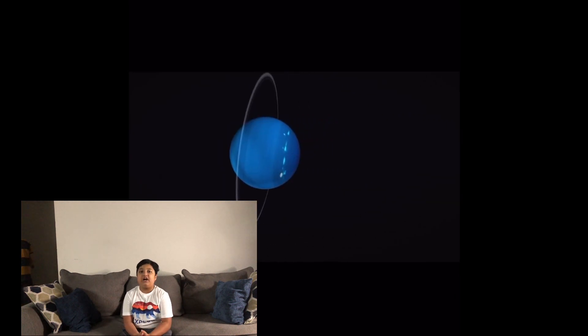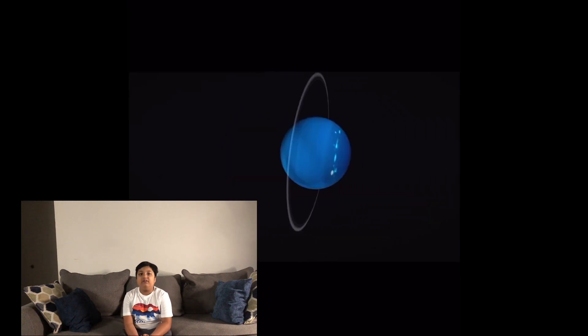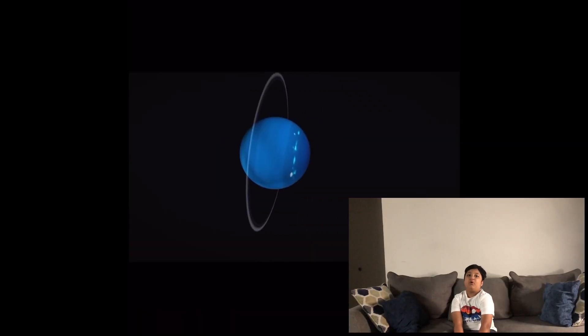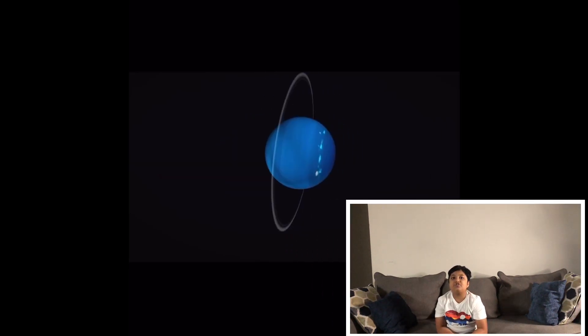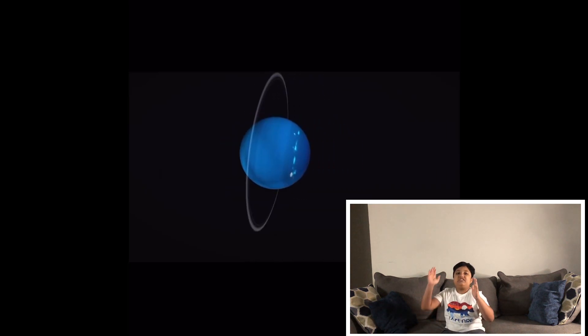After Saturn comes Uranus. Uranus is an ice giant and it is a gas giant too. It's much colder than Saturn and Jupiter. It is so tilted that the planet looks like it's spinning on its side. It would be crazy if Earth spins like that.